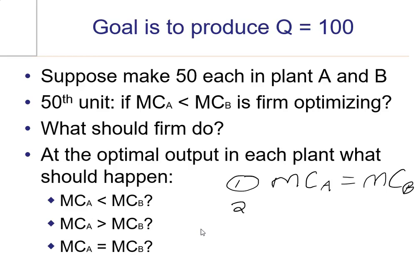The second part of the economics to solving this question is your output that you make in plant A plus the output that you make in plant B better be equal to the total that you want produced. In this case, your total is 100.